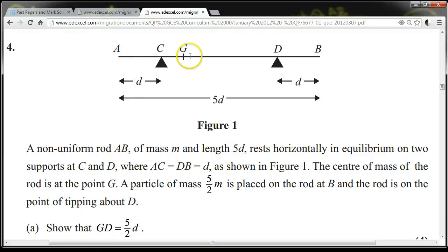A non-uniform rod AB of mass M and length 5D rests horizontally in equilibrium on two supports at C and D, where AC equals DB equals D, as shown in Figure 1.